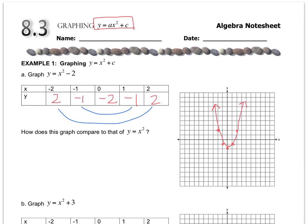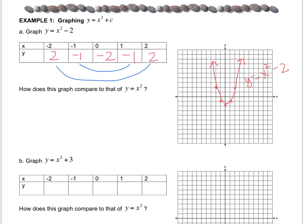And we have to make sure that we label. So y = x² - 2. How does this graph compare to y = x²?